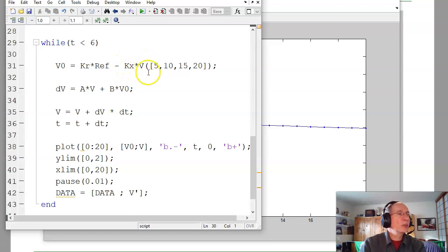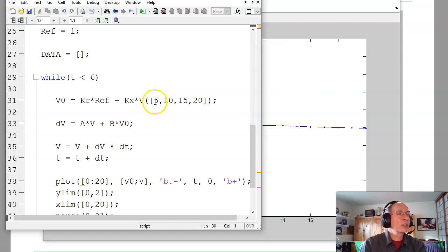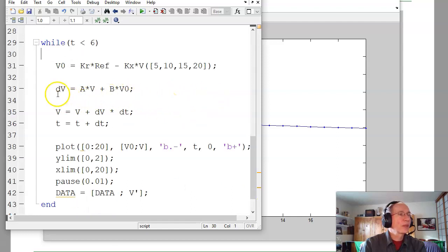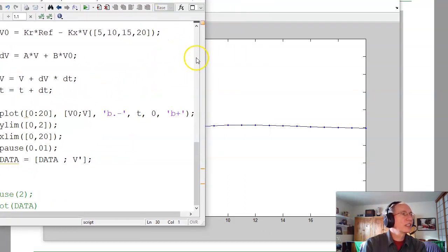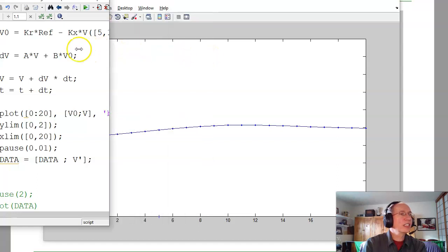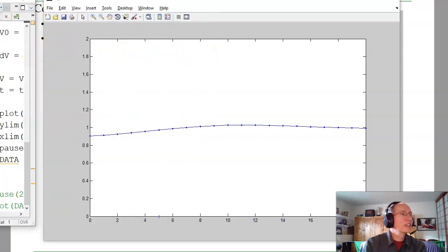In the main loop, I'm going to calculate the input. That's the voltage on the left, V0. That's Kr times ref minus Kx times V. And V is a 1 by 4 vector, that's the voltage at node 5, 10, 15, and 20. Once I know the voltage on the left, that's my input. I've got x dot equals Ax plus Bu, using voltages rather than x. Integrate voltage, integrate time, and plot. And here's what that looks like.